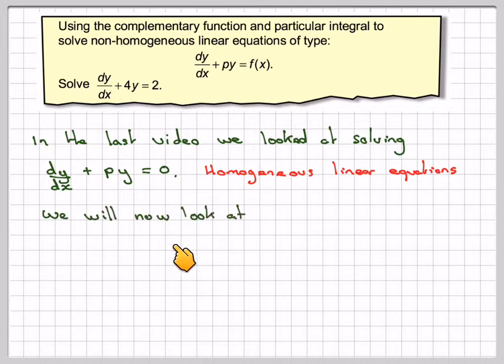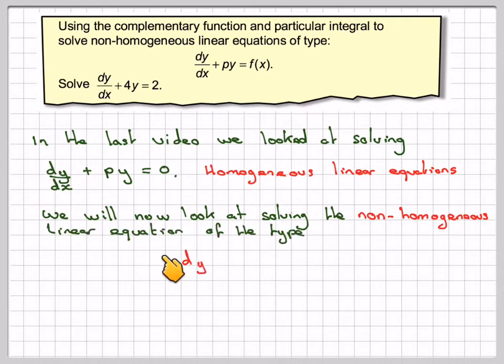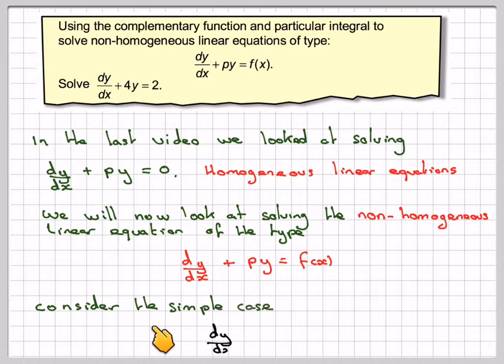Now, we will look at solving the non-homogeneous linear equation of the type dy by dx plus py is equal to something. Here it's just equal to 0. Let's consider a very simple case of this, which is dy by dx plus 4y is equal to 2, which is the question up here.